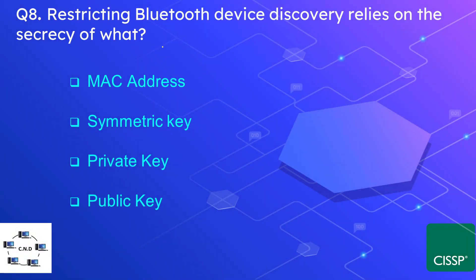Question number eight: restricting Bluetooth device discovery relies on the secrecy of what? The options are MAC address, symmetric key, private key, and public key. The correct answer is the MAC address. We want to secure or hide the MAC address, which is why we disable Bluetooth discovery.